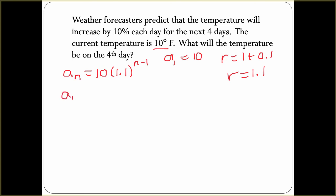If we want to find the fourth day, a_4 is 10 times 1.1 to the (4 - 1) power. If I see you have 4 - 1 for your power, I'm good.